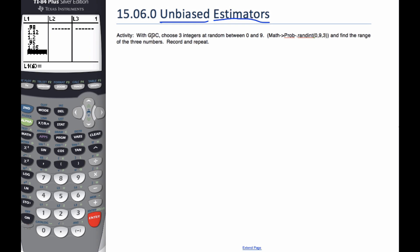With our calculators — actually I'm going to use Excel — I'm going to get three integers at random between 0 and 9. And I'm going to find the range of these three numbers. This range idea, which I'll call r, a little r-bar, because I'm going to get the average of these numbers. If it is an unbiased estimator, this average should actually equal the range, and I'm going to call it rho — capital R.